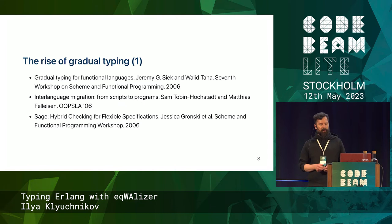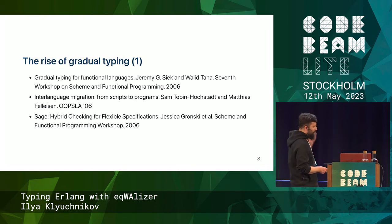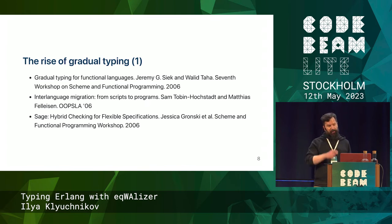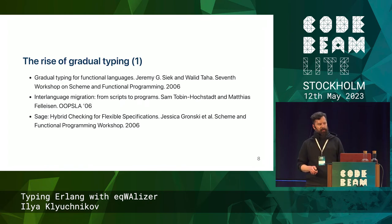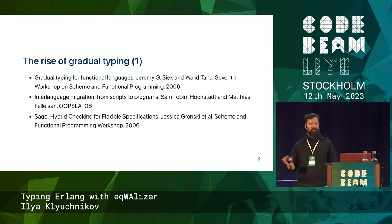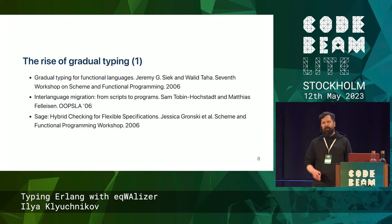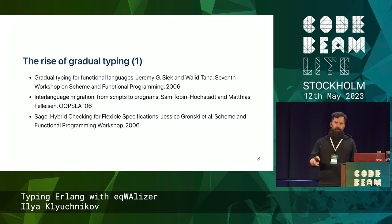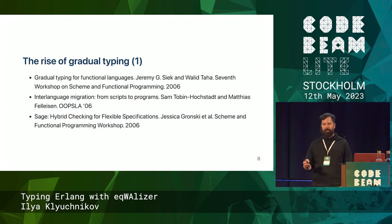So what is in the heart of Eqwalizer and how we got here? About 15 years ago — even more — what happened in computer science is that three different groups of computer scientists published approximately at the same time three papers on exactly the same topic, which is now called Gradual Typing. Gradual Typing is a technique for introducing typing discipline into originally dynamically typed languages, like Python and Scheme.